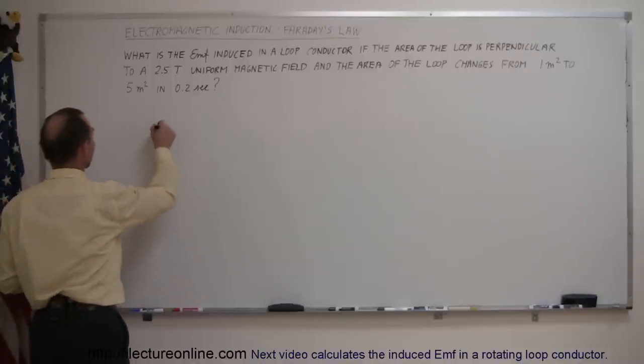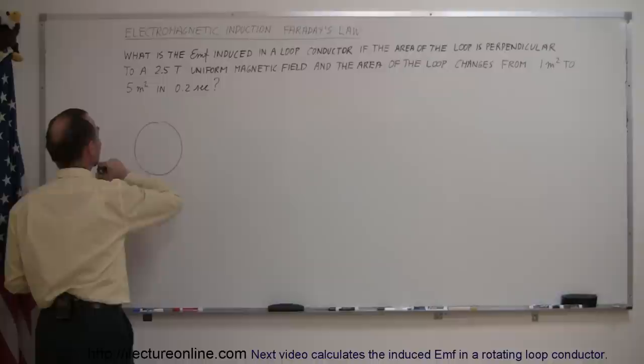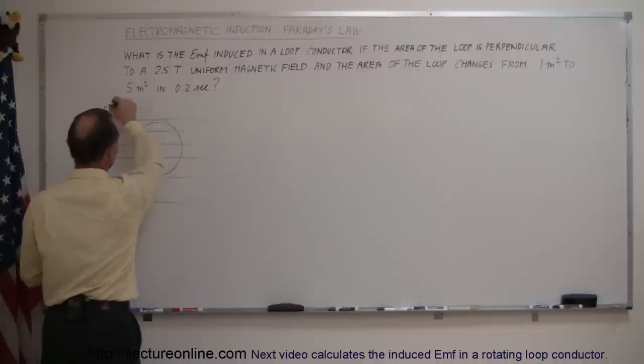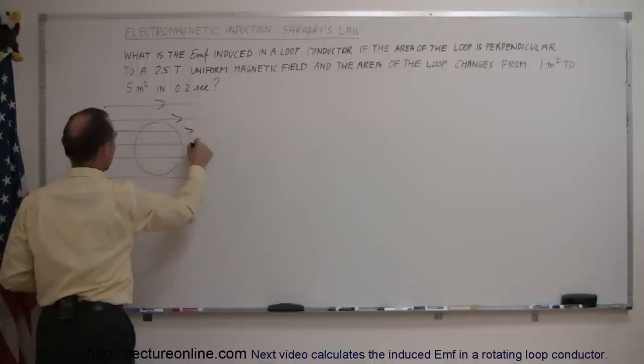Alright, so let's imagine what we have here. We have a loop made out of a conductor in a magnetic field. There's our magnetic field.